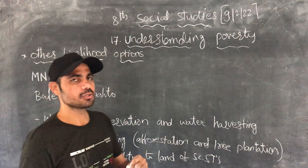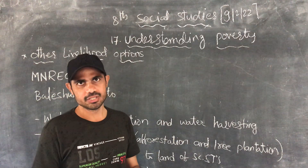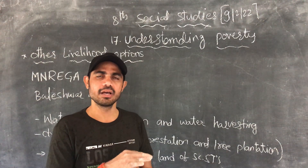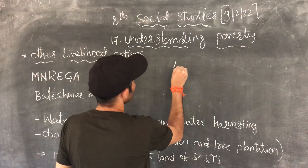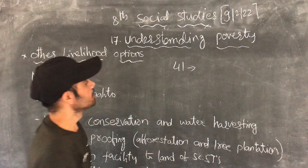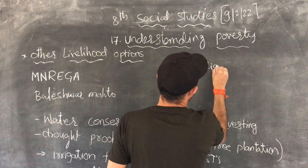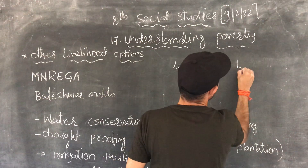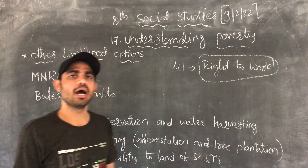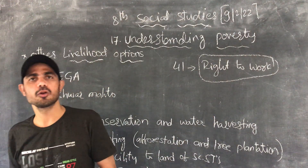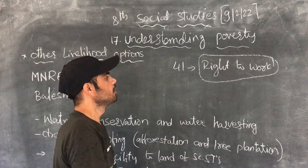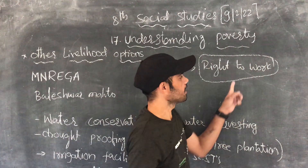That is why the government also has to take care of its citizens. According to the Directive Principles, Article 41 says the right to work. When people are not getting any kind of sufficient work, the government has to take responsibility to provide them the right to work.